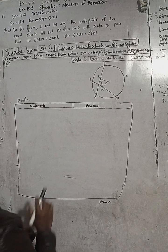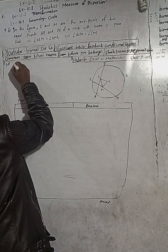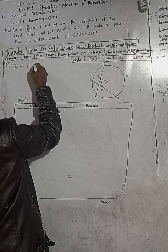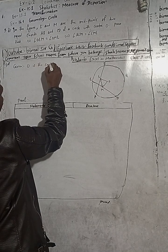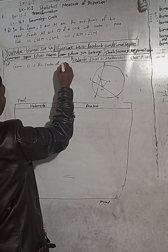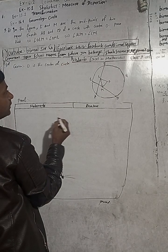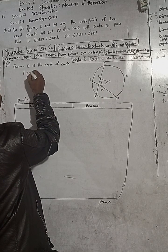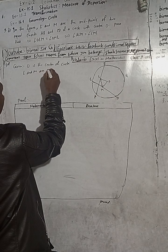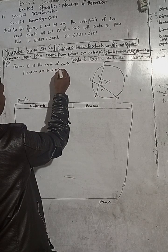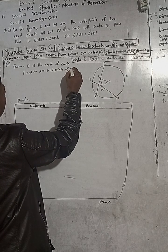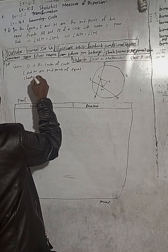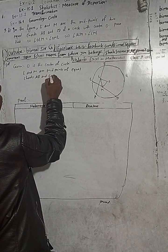Now, first of all I will start with the Given. Given: O is the center of the circle, and L and M are the midpoints of equal chords AB and CD.